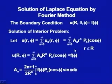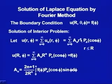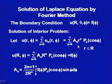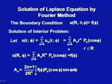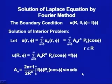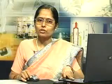For r > R (outside the sphere), the interior solution fails because r^n does not approach 0 as r → ∞ when n > 0. So the boundary condition u(r,φ) → 0 as r → ∞ cannot be satisfied using r^n. This means for the exterior problem (r ≥ R), we must use the other solution g_n*(r) = 1/r^(n+1).